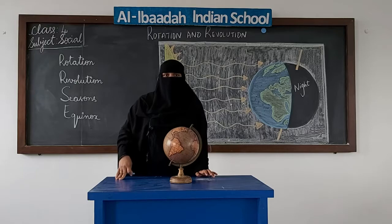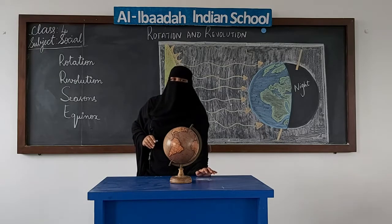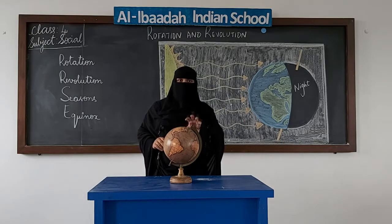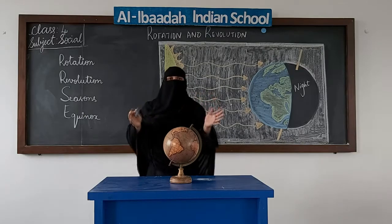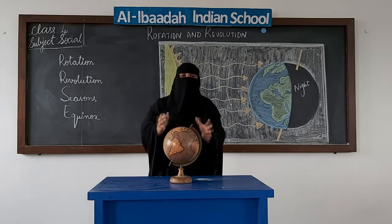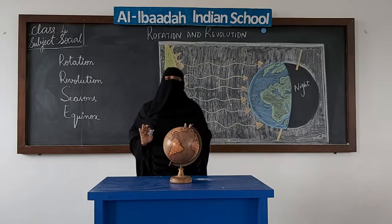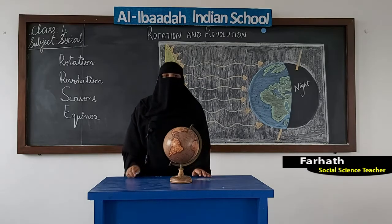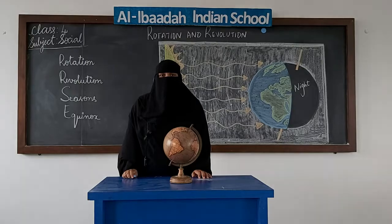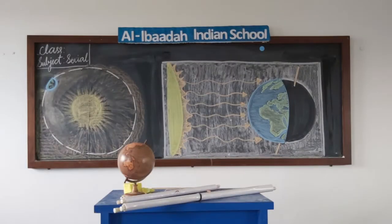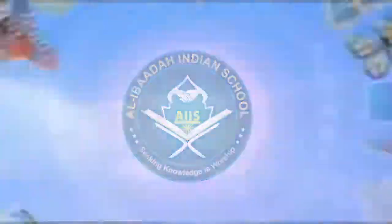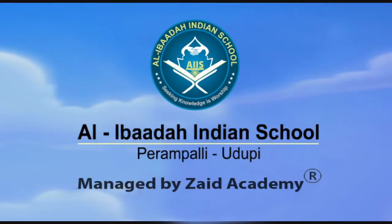Twice a year we will have equinox — that is when the sun will be on the equator and the whole world will have equal days and nights. That is all. Jazakumullahu khaira. Assalamualaikum warahmatullahi wabarakatuh.